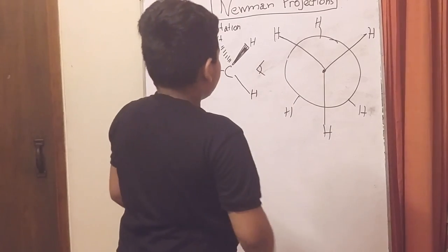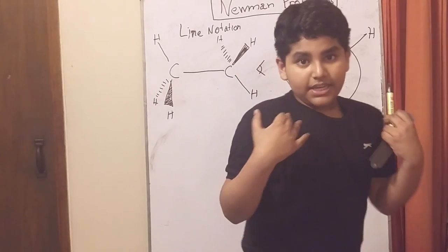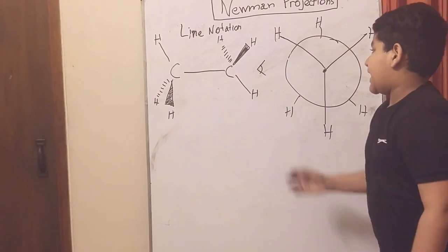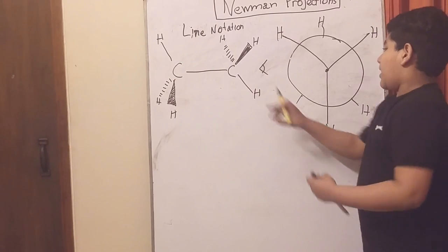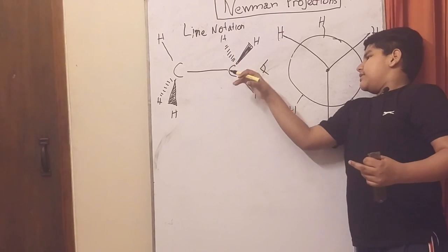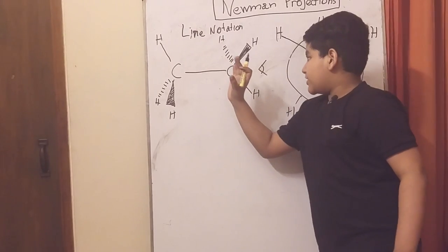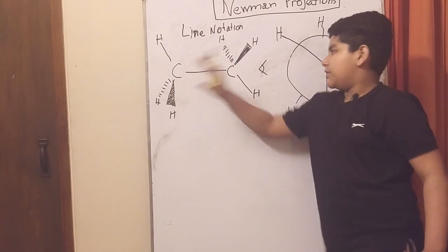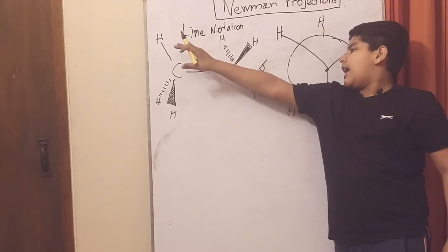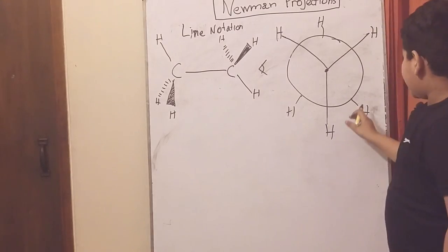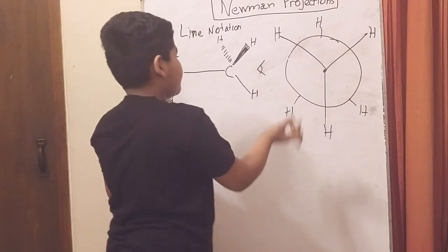Let's say this is our molecule and I am looking from here. Molecules are 3D, so I'll be able to see the front carbon but it will block my vision of the back carbon. But I can still see the hydrogen bonds a little bit over here.